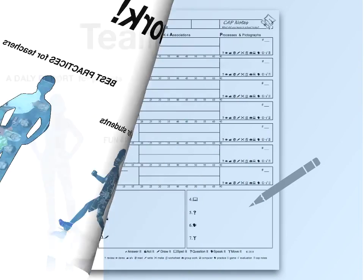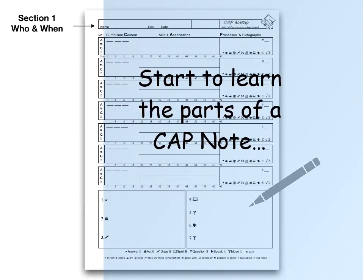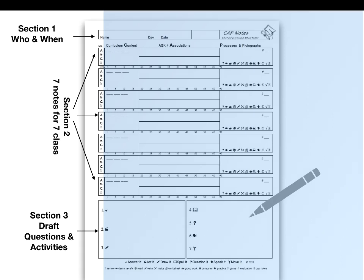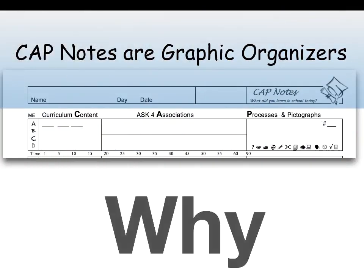Here are the main parts of a cap note. The first section is about who wrote the cap note, when it was written, and who helped. A score may be entered later. There are seven notes for seven lessons, and the third section is for drafting questions and activities for the way game. Cap notes are graphic organizers.